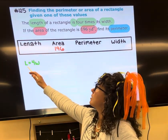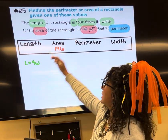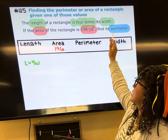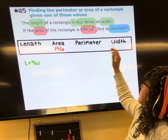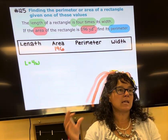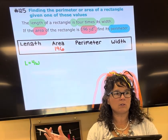Which is the same thing as L for length. The word 'is' means equals. Four times width, four next to W, is four times W. Okay.